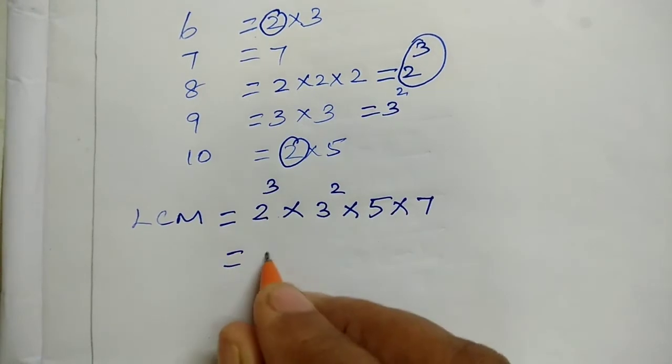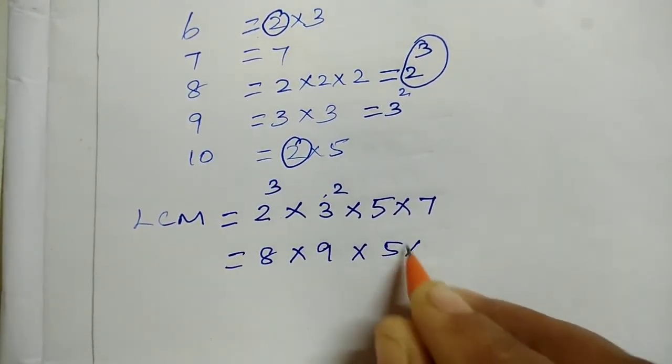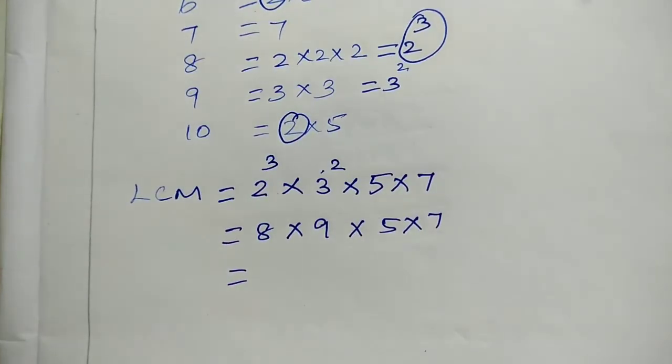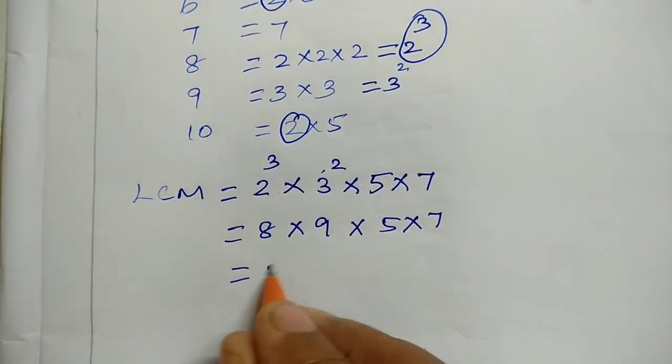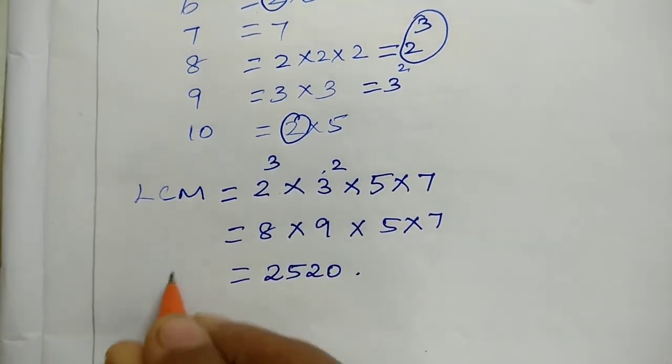Now we multiply everything. 2 cubed is 8, 3 squared is 9, 5 into 7. Now we calculate: 8 into 9 into 5 into 7 equals 2,520. This is the LCM.